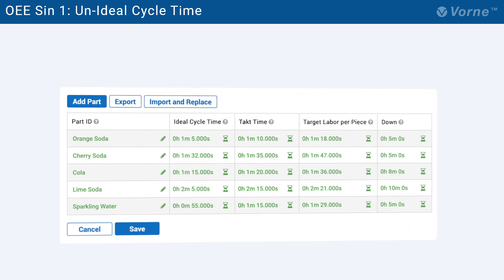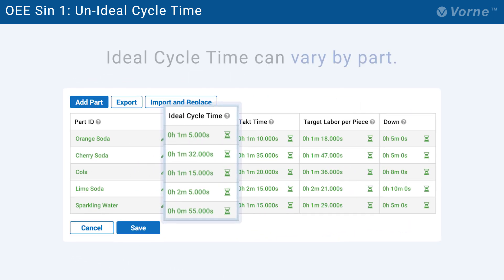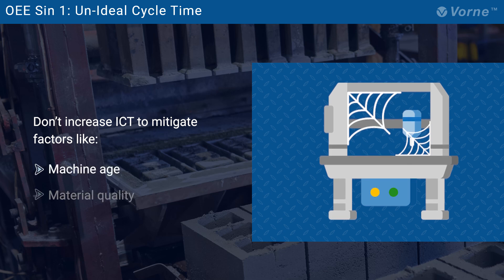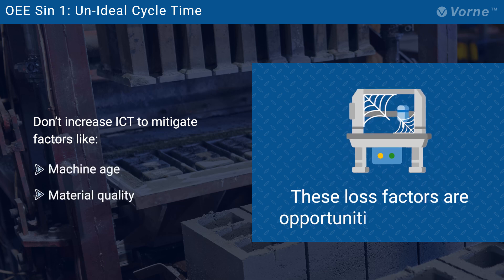Keep in mind that even within a given manufacturing process, ideal cycle time may need to be set by part. You should NEVER increase the ICT to mitigate factors such as machine age or material quality. Instead, these types of loss factors should be considered opportunities for improvement.